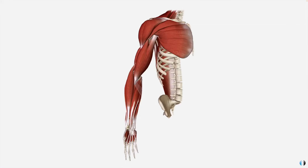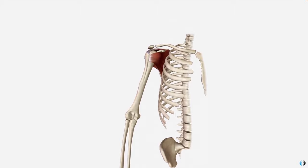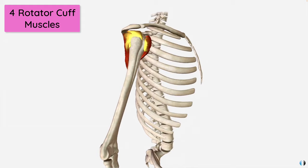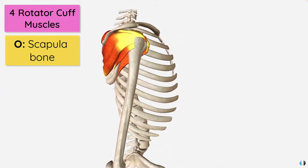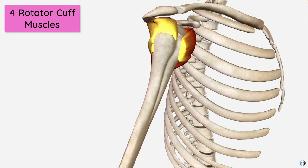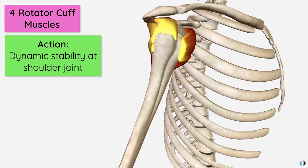With our Clinical Physio anatomy model, let's remove the major muscles around the upper limb and isolate the four rotator cuff muscles. We can see that all of them originate on the scapular bone and insert into the proximal humerus, and their main role is to work together as a group of four to provide dynamic stability of the shoulder joint.